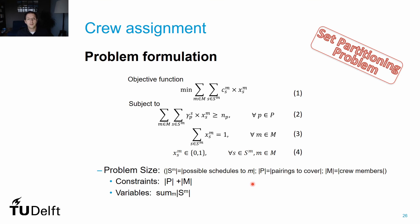The problem size equals the number of pairings plus the number of crew members in terms of constraints, and it has as many decision variables as the sum of all rosters considered for all crew members. Again, it can be asked if this problem is complex — it seems easy to follow and with straightforward constraints. So where is the complexity? I'll let you think about this.